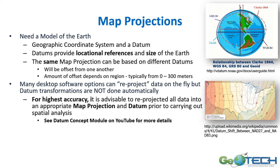In order to project your map from a globe to a flat surface, you'll need to use a map projection based on the model of the Earth, geographic coordinate systems, and a datum. Datums provide the locational references and sizes of the Earth. The same map projection can be based on different datums, so just knowing the map projection is not enough — you'll also need to know what datum was used. If you don't use the correct one, features may be offset from one another, and the amount of offset can be nothing to 300 meters.